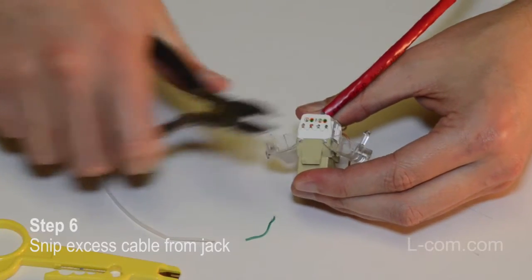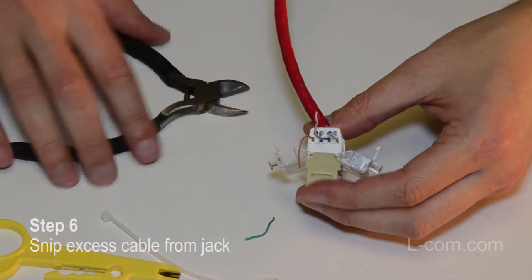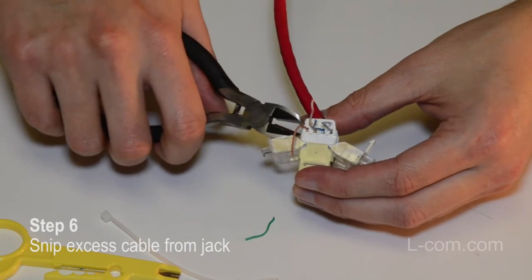Snip any excess wires sticking out of the top and the bottom of the jack. This will allow the housing to close securely and keep the wires from coming in contact with anything else.